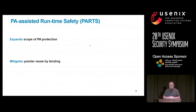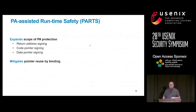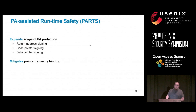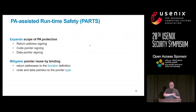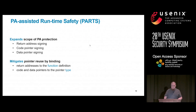We introduce PARTS — PA-assisted runtime safety. We expand the protection to sign return addresses, code pointers, and data pointers. We mitigate reuse attacks by first binding return addresses to the specific function they were created in, so you can no longer take the return address from function one and use it in function two. For code and data pointers, we use the type of the pointer to create the modifier used for signing.